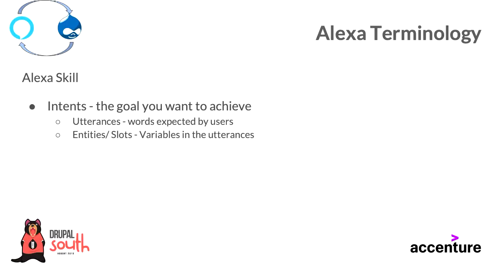Each Alexa skill can have multiple intents. Intents are essentially the goals we want the user to achieve. Within intents, we can have utterances and slots. Utterances are the exact terms you expect the user to say — for example, 'what time is it', 'how's the weather today', 'how's the weather today in Hobart', 'how's the weather tomorrow in Hobart'. Those are all utterances. Within these utterances, 'today' is a slot because it's a variable — I can say 'how's the weather tomorrow' or 'how's the weather tomorrow in Hobart'. So 'tomorrow' and 'Hobart' are variables, called slots.